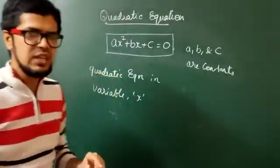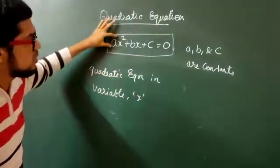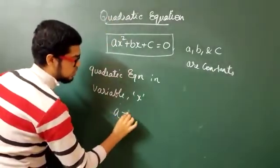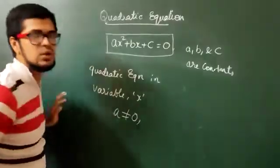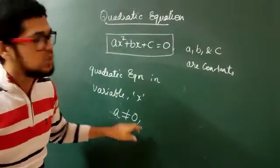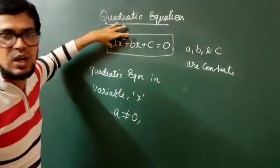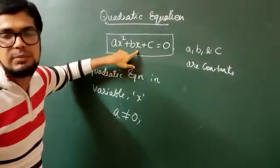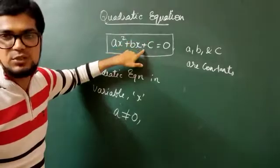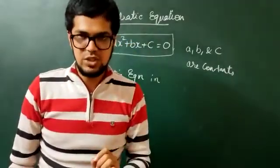One more thing to be very clear about is the first constant, A — this A cannot be equal to 0. You may ask why. Because if A equals 0, this entire term gets reduced to 0, and we are left with only BX plus C. Since the highest degree of X would then be 1, it cannot be called a quadratic equation.